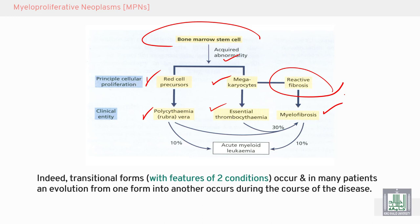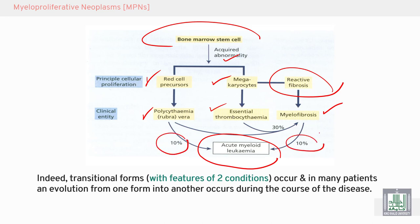All three conditions can convert to acute myeloid leukemia, but at different percentages: 10% of polycythemia vera and 10% of myelofibrosis convert to AML. Also, 30% of polycythemia vera and essential thrombocythemia can convert to myelofibrosis.